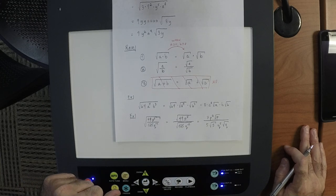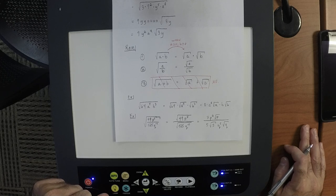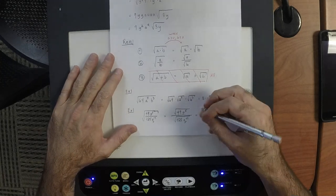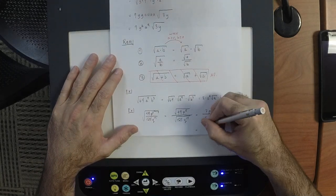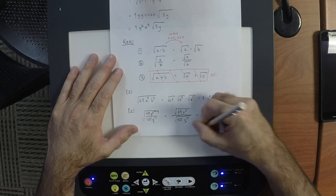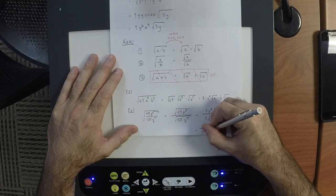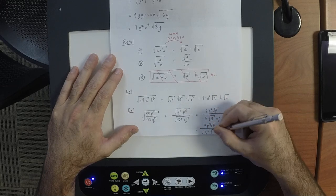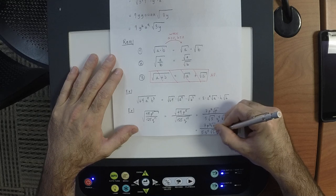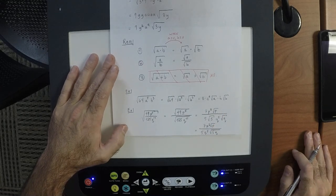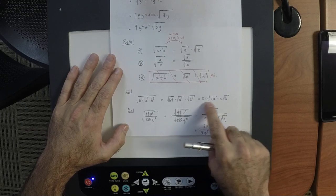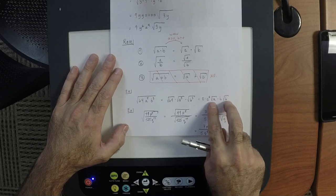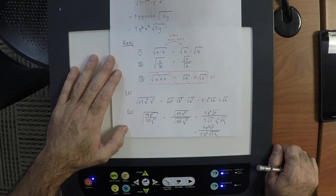A student asks whether the remaining radicals could be combined under one radical sign. Yes — by the product rule you could move the terms together and put them both under the same radical. That's permissible.